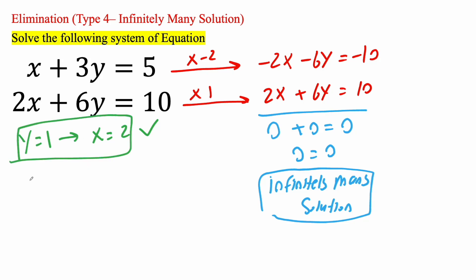But again, there's infinitely many solutions. So we can also do something like this. y is equal to 2. Let's do the same thing. 3 times 2 is 6. We're going to subtract it. 5 minus 6 is negative 1. And so x is equal to negative 1.